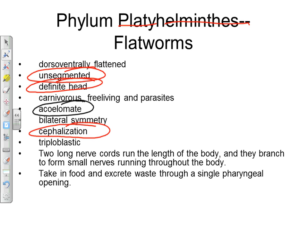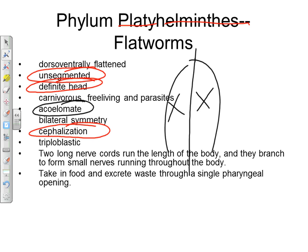Flatworms have bilateral symmetry, meaning if you drew an imaginary line down the middle of their body, both sides are mirror images of each other. During embryonic development, their blastula organizes into three germ layers forming a gastrula, making them triploblastic. They have two long nerve cords running the length of their body that branch into smaller nerves — far more complex than jellyfish. They take in food and excrete waste through a single pharynx-like opening.